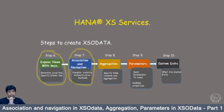In the seventh step, we are going to learn about association and navigation property in XSO data. Association is used to define the relationship between two entities based on a particular column and the multiplicity between both the entities. Now let's define an association between two entities — the customers table and orders table in our XSO data.